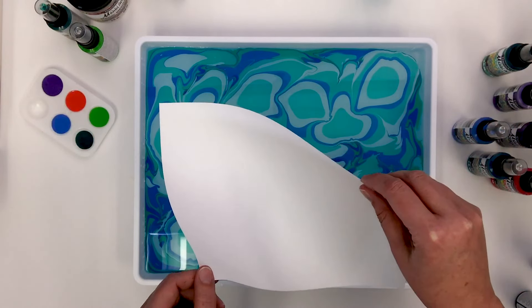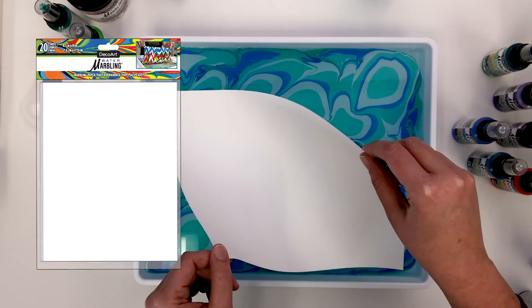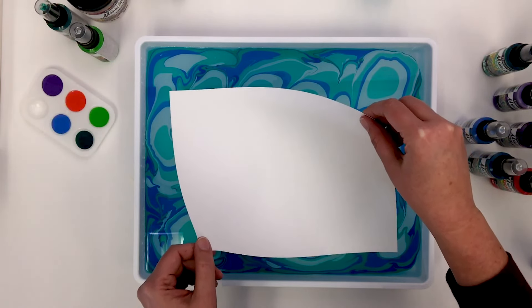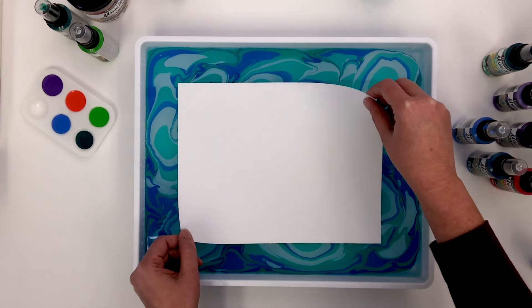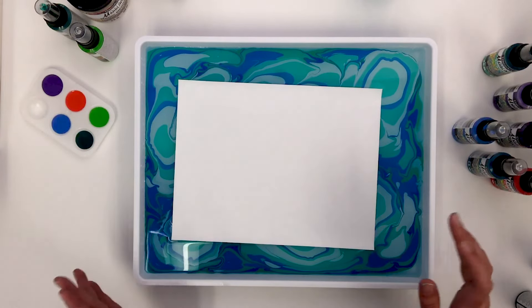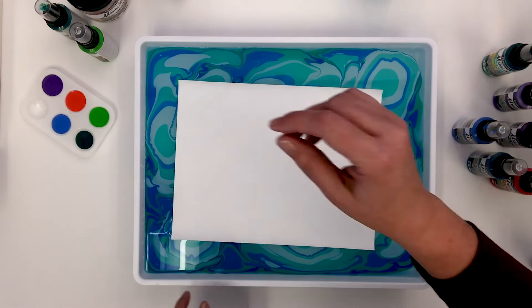To make a print, we're going to use DecoArt water marbling paper. Pinch the opposite corners of the paper to create a little bend so that the middle of the paper touches down first. Make sure to release the paper without moving it from side to side in the bath. Doing so can lead to hesitation marks in the design.